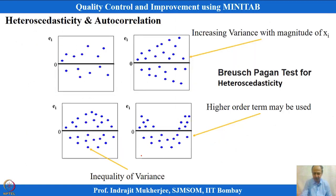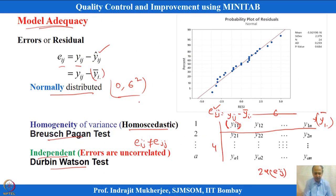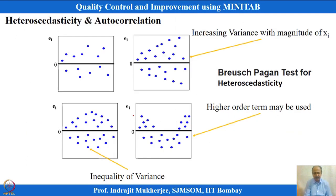Heteroscedasticity refers to non-constancy of variance, which is checked by the Breusch-Pagan test. When the variance of errors increases in magnitude across different levels of X — say 4 levels — and the variance is visibly changing, that indicates a heteroscedastic condition.